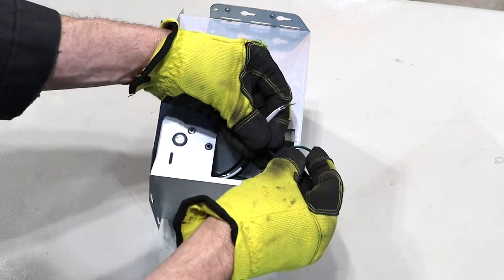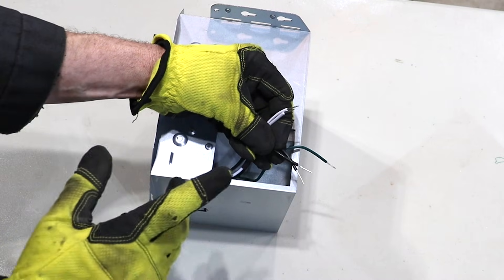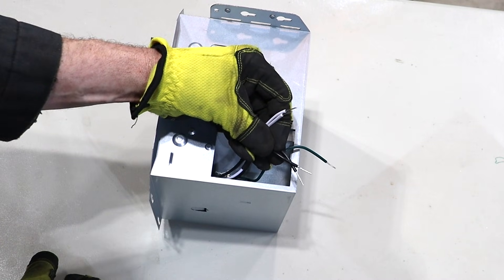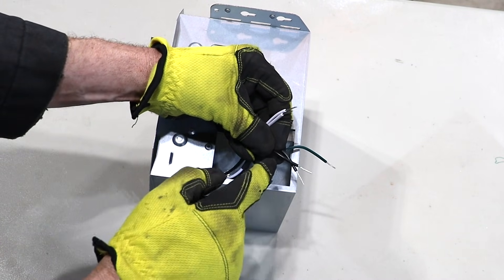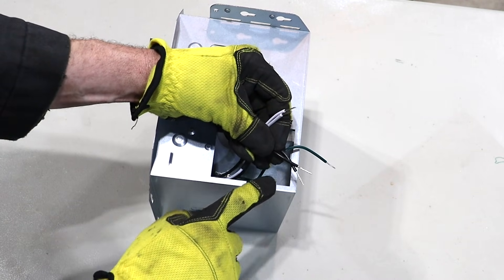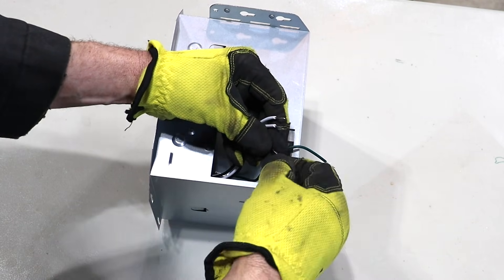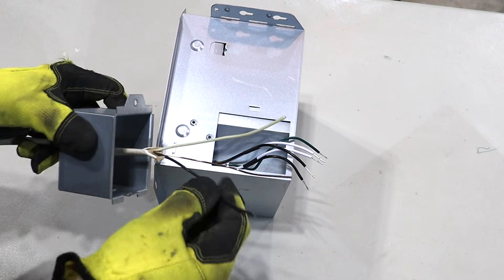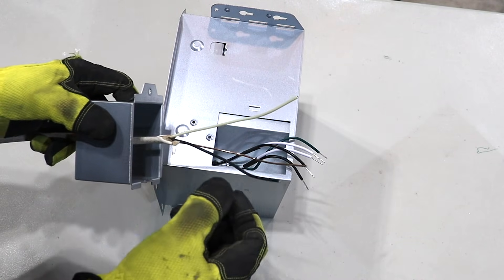With the black wires if you have a single switch and there's only one black wire that's going to be coming up to the fan light combo to power it you can wire nut these together. And this is what I mean by a single switch setup.